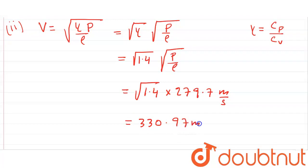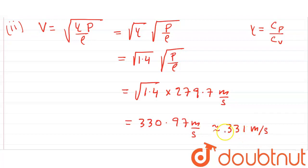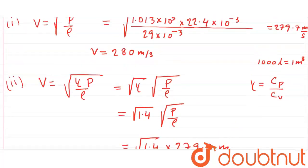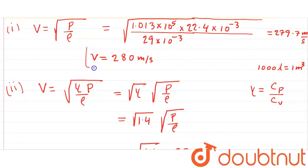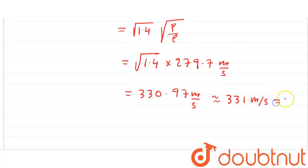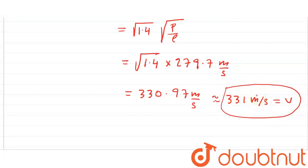330.97 m/s, which if we round up is approximately 331 m/s. So in the second case using Laplace's formula, the velocity of sound comes out to 331 m/s. Laplace's formula is more accurate compared to Newton's formula. Both were asked, so we solved both. Newton's formula gives 280 m/s and Laplace's formula gives 331 m/s. These are our final answers. Thank you for watching this video.